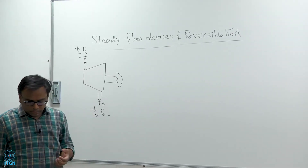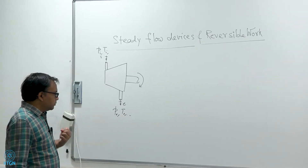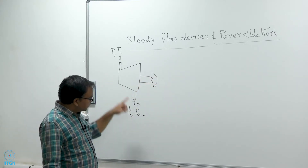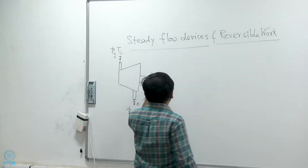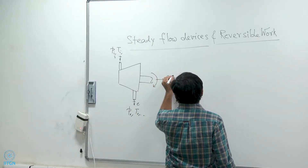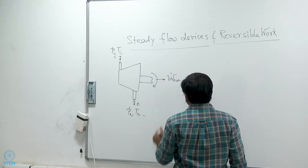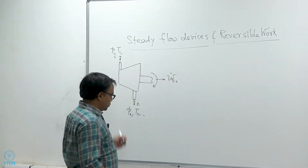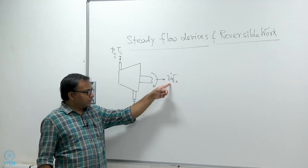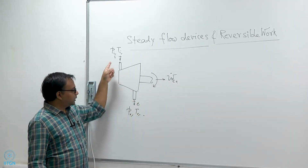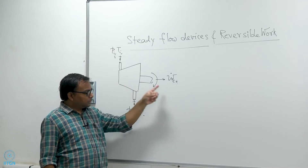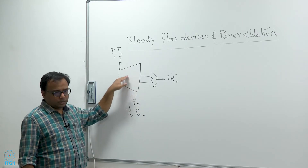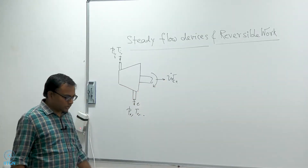In particular, we are interested to see what insight we can get on the work output from the turbine if we apply the second law in conjunction with the first law. So far there was some work output W-dot-cv if we choose the turbine as the control volume. We can calculate W-dot-cv given the inlet and exit states, but we want to see what is the consequence of applying the second law and what is the consequence of having irreversibility inside this turbine on the work output.